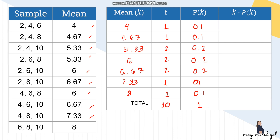To find the mean of the sampling distribution, multiply each x-bar by its probability. Important: do not round off intermediate values to maintain accuracy — only round if the decimal is infinite. So: 4 × 0.1 = 0.4, and 4.67 × 0.1 = 0.467.